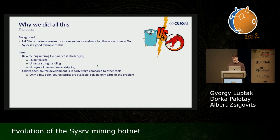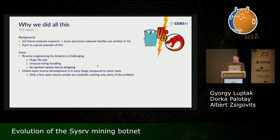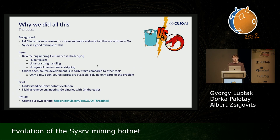SysRV is a botnet that targets Linux and Windows servers. It was written in the Golang or Go language. There are an increasing number of malwares written in this language, mainly because it supports cross-compiling, so you only have to maintain one code base to get a binary that runs on Windows, Mac OS, or Linux. But as we found, reverse engineering Go binaries can be really challenging. Golang uses static linking by default, which results in a huge file size and a lot of functions to go through. It handles strings in a unique way that differs from C, and there is the general problem of stripped binaries when there are no debug symbols. The goal of the research was to understand how the SysRV botnet evolved over time and, in the process, making reverse engineering Go binaries with Ghidra easier.